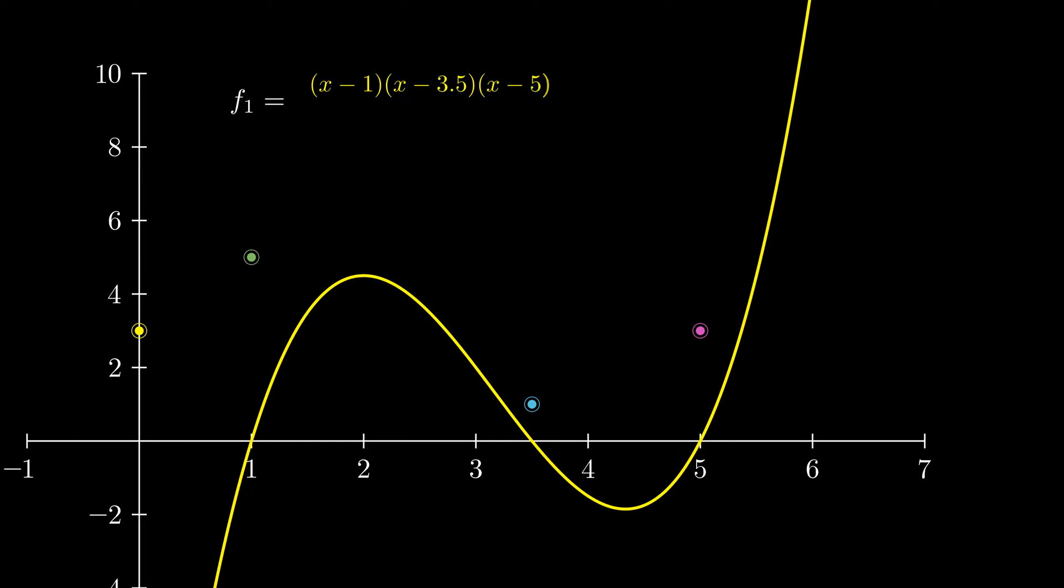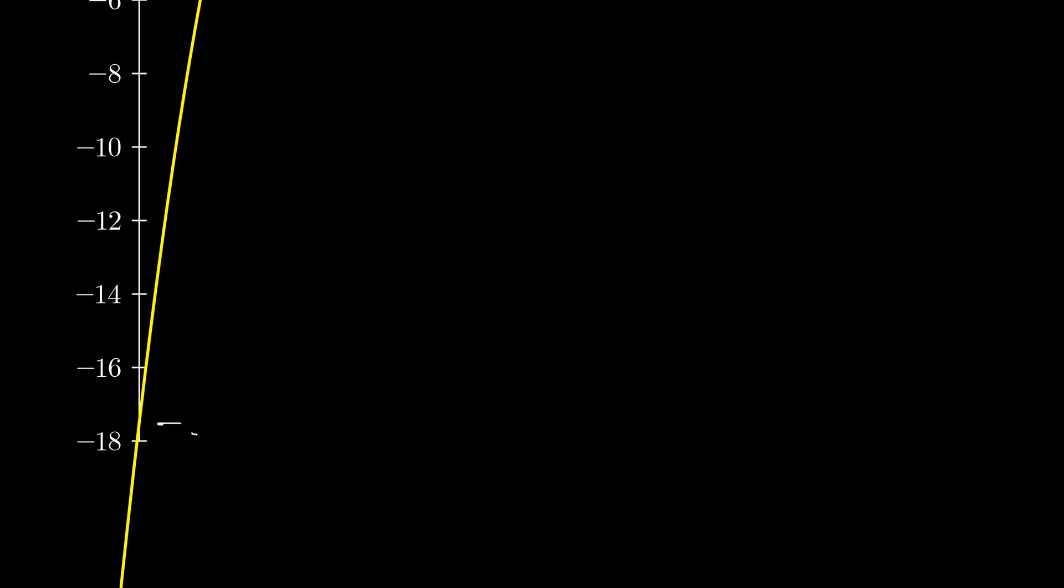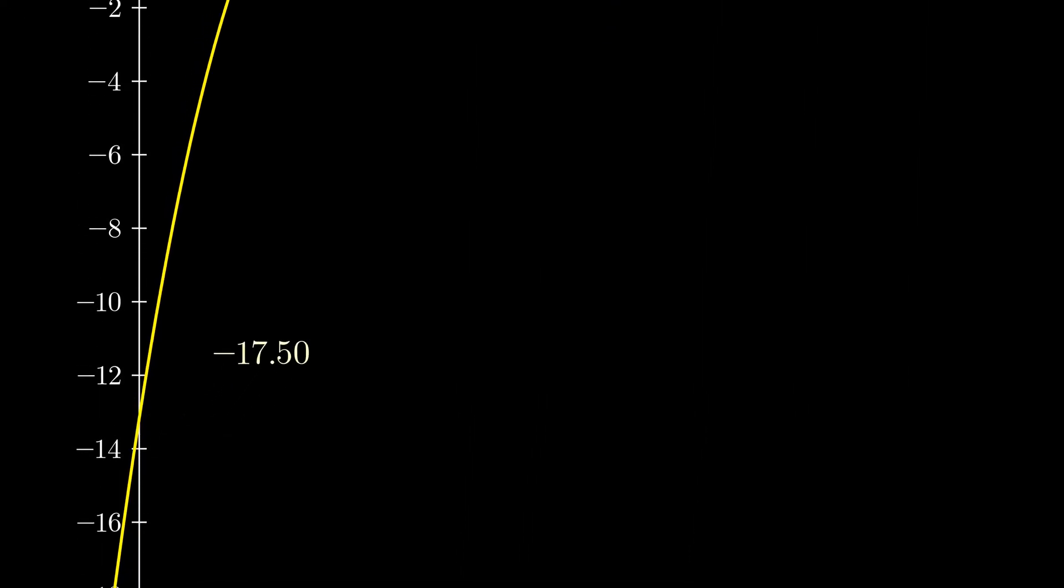That was easy, but it doesn't pass through the given point yet. One simple way to force the function to do this is to divide the function by the y value at the required point.